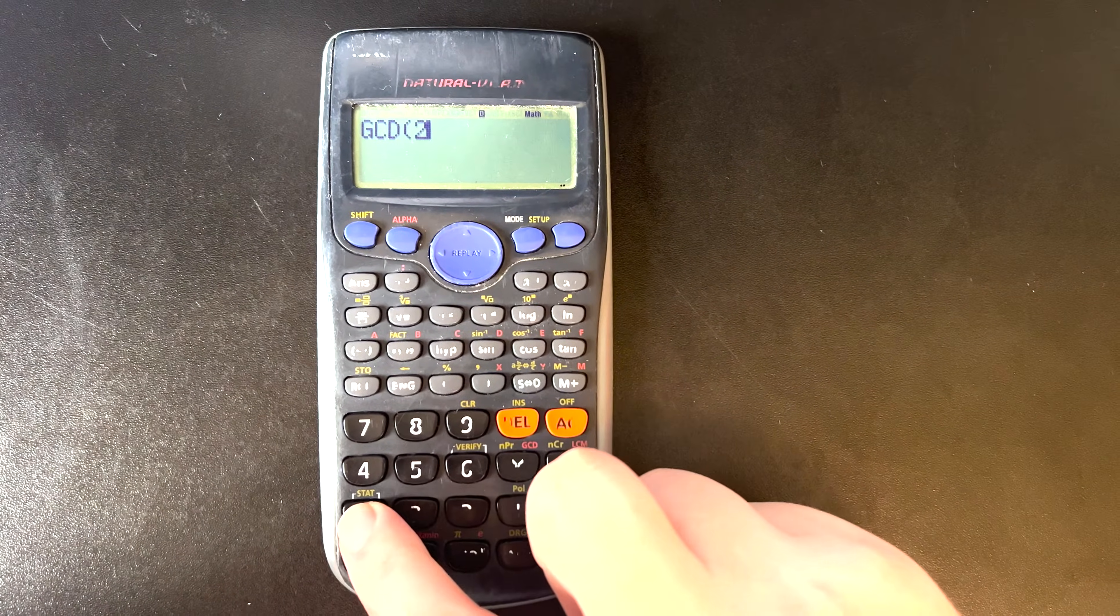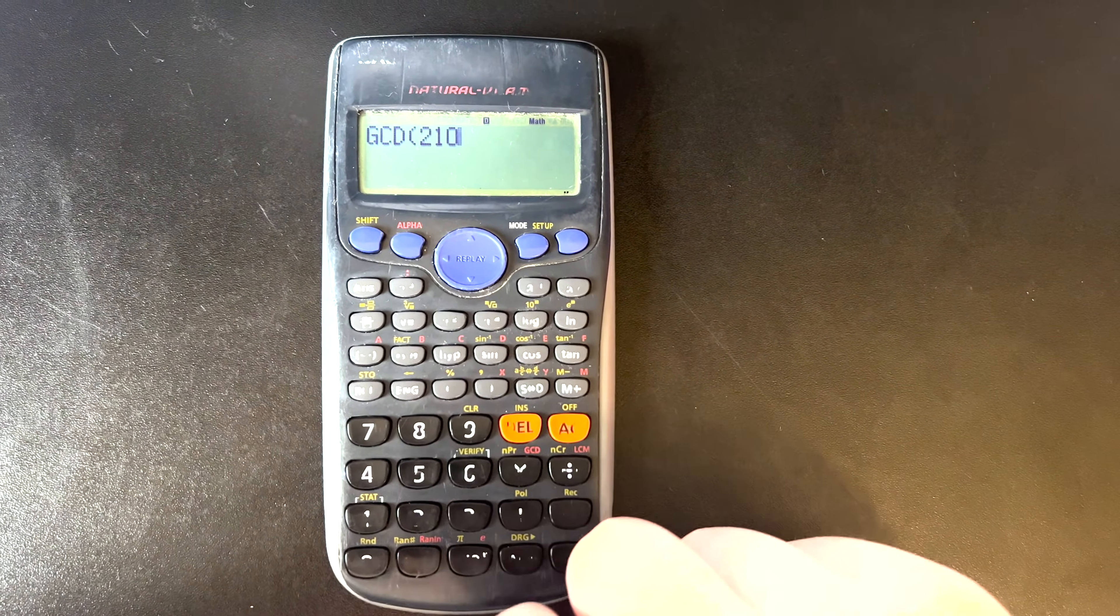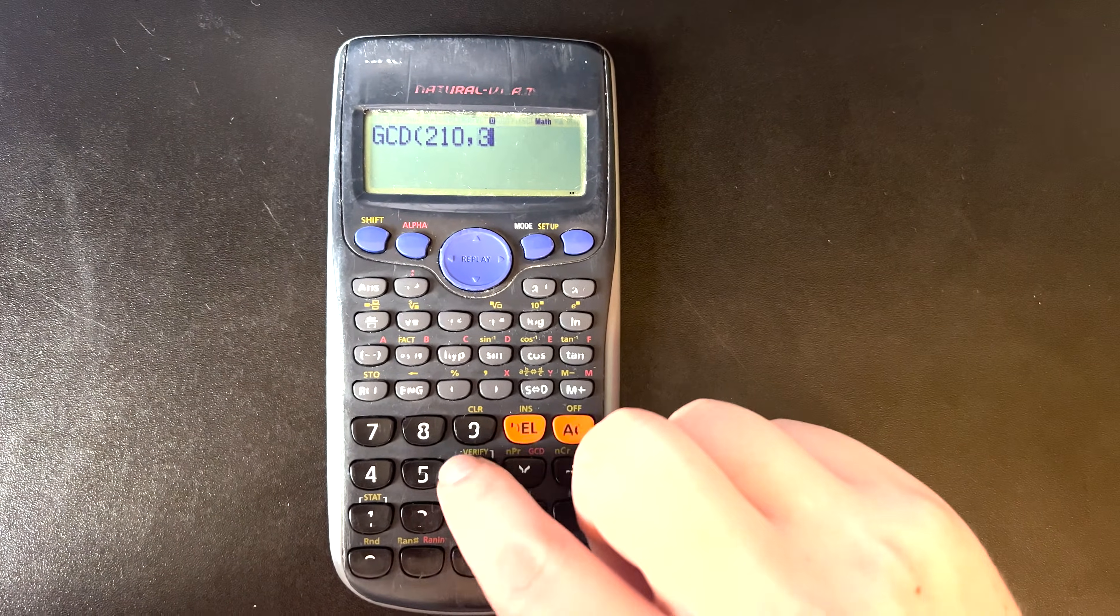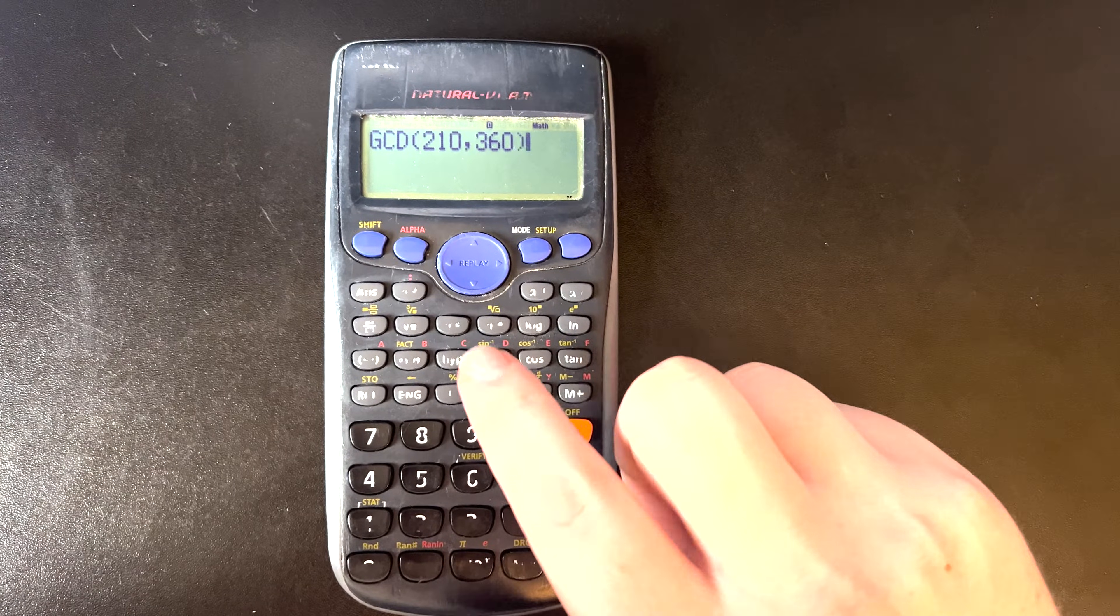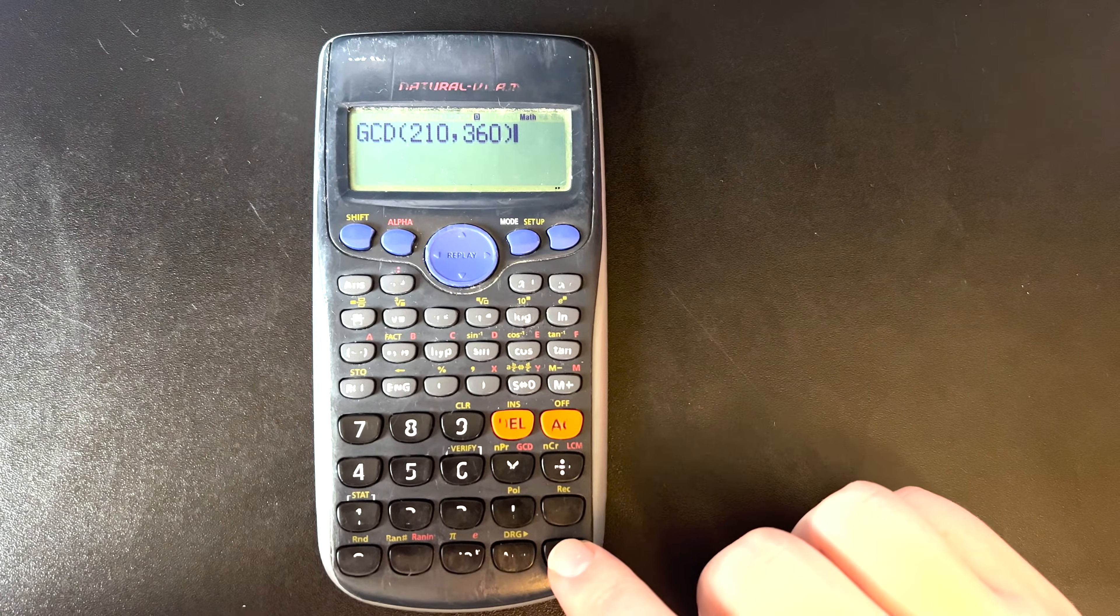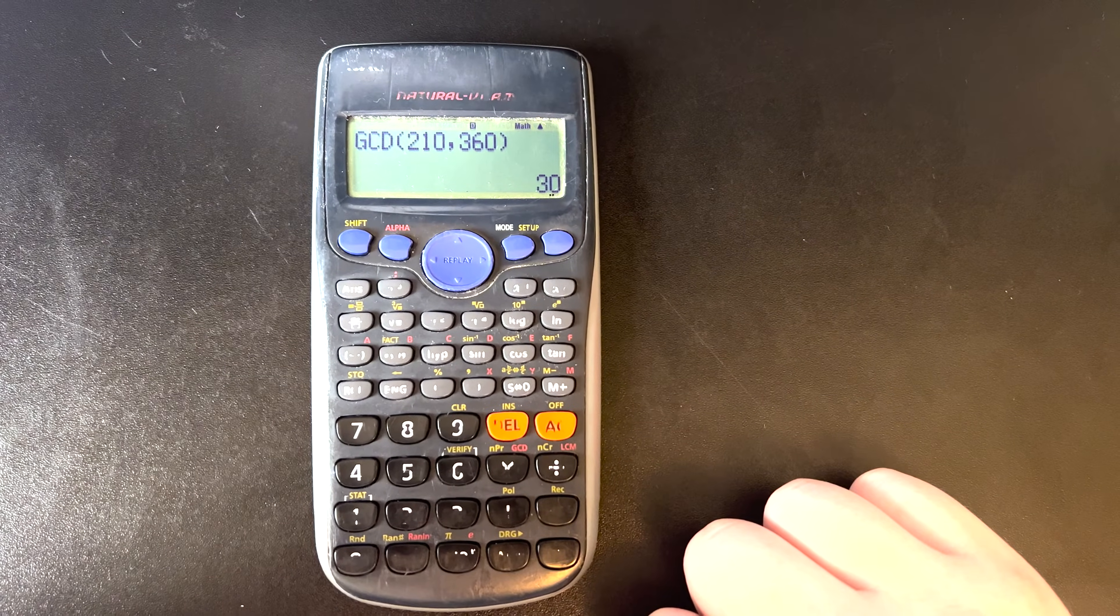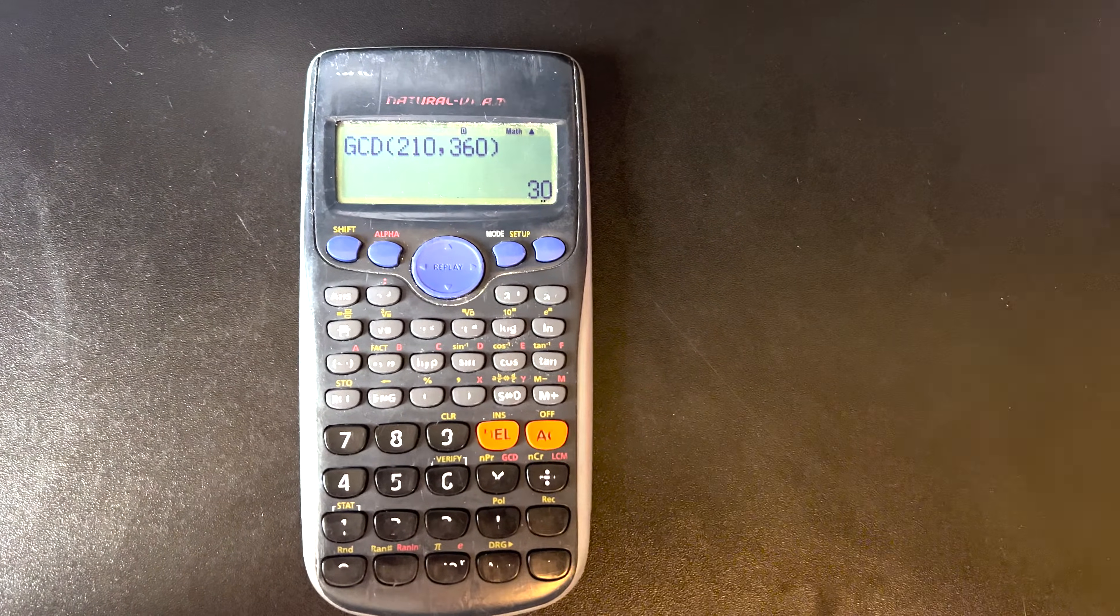So let's enter our two different numbers that we want to find the greatest common divisor for. Let's say 210, we'll separate that with the comma, and let's say 360 for our other number. Now I'm going to go ahead, close that parentheses, and press equals, and then it tells us that the greatest common divisor of these two numbers is 30.